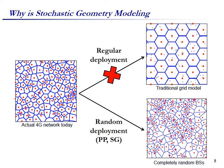In this slide, I would like to tell you why stochastic geometry is used to model the system level of cellular networks. We can see that the actual deployment of a cellular network is absolutely irregular or random. This confirms the necessity of modeling the cellular network by using stochastic geometry rather than a regular grid model. It should be noted that stochastic geometry is not only aligned with actual base station deployment, but also offers mathematical tractability.